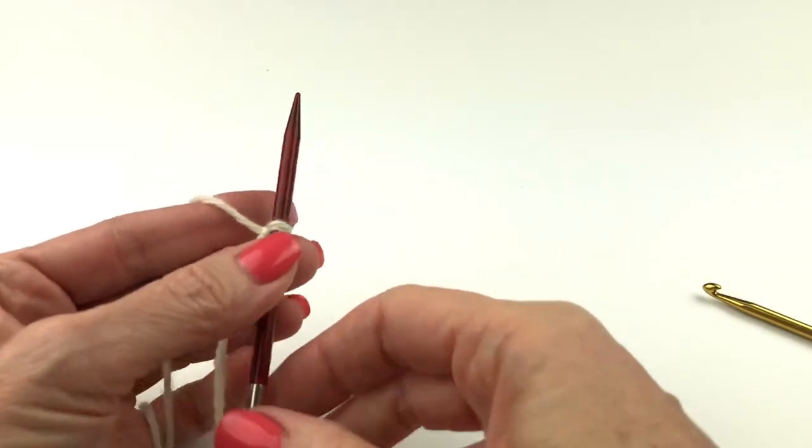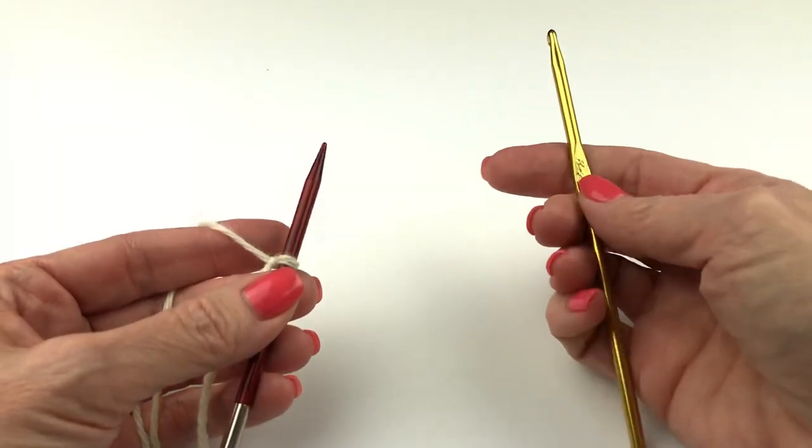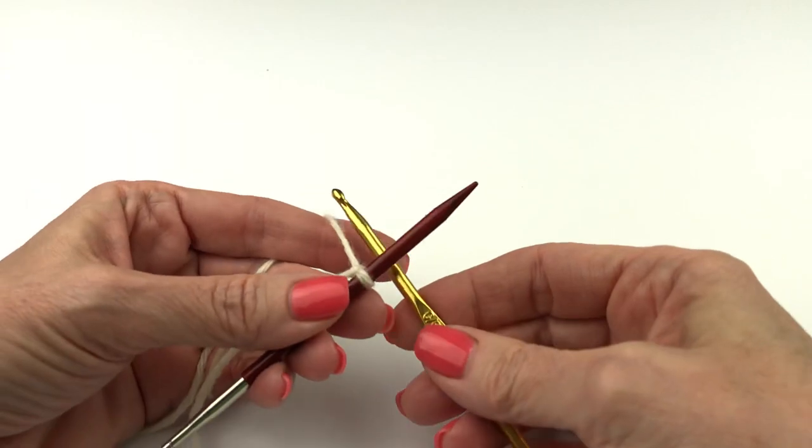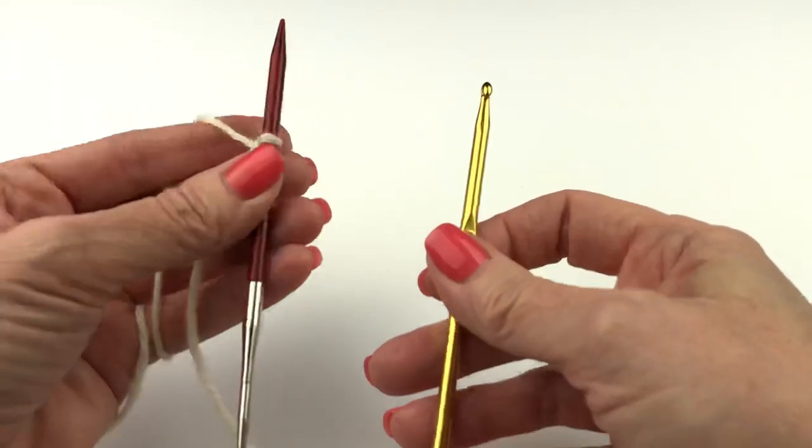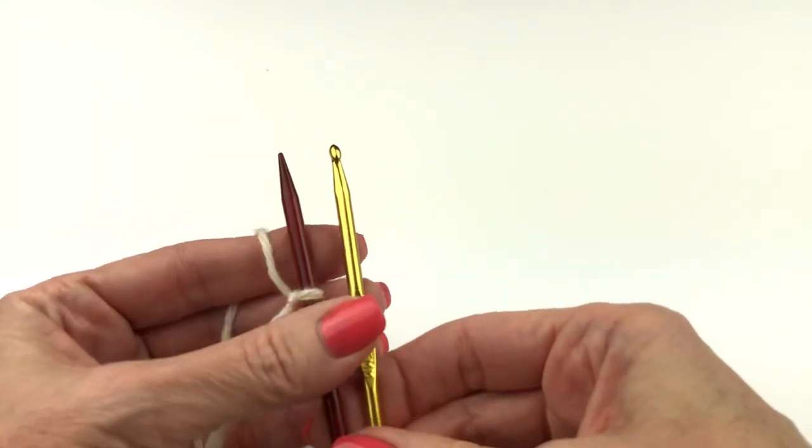Now in the previous Chinese Waitress tutorial with the crochet hook we had our needle and hook perpendicular to each other. In this one we're going to hold them parallel to each other.